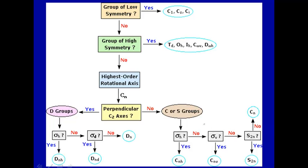You don't have to memorize this — just use the flowchart. There's probably an app for your phone to determine symmetry. Computational chemistry programs and ChemDraw will determine symmetry if you put in a molecular structure, just like you don't need to know how to take square roots anymore. But this is how you do it by hand.